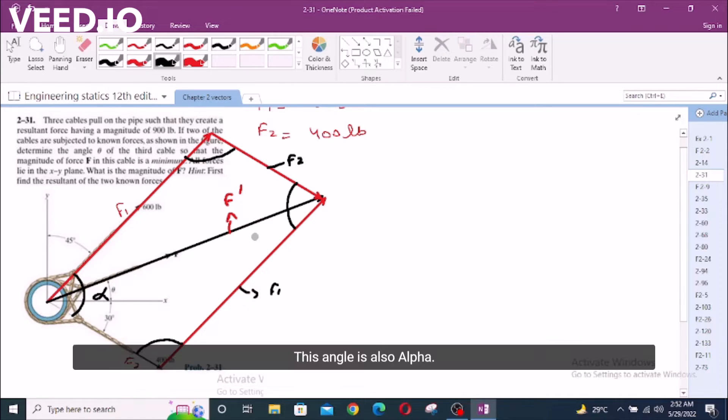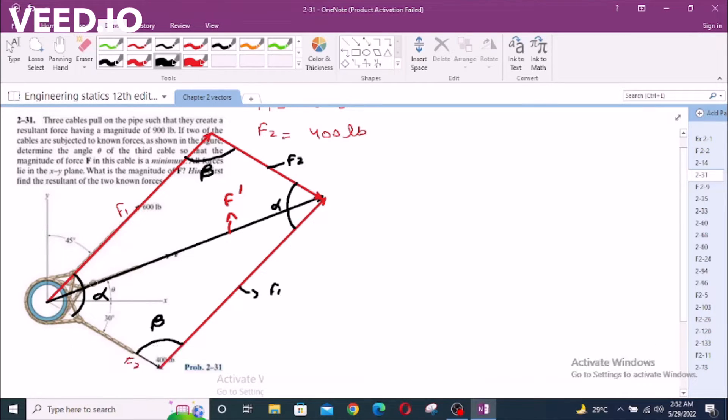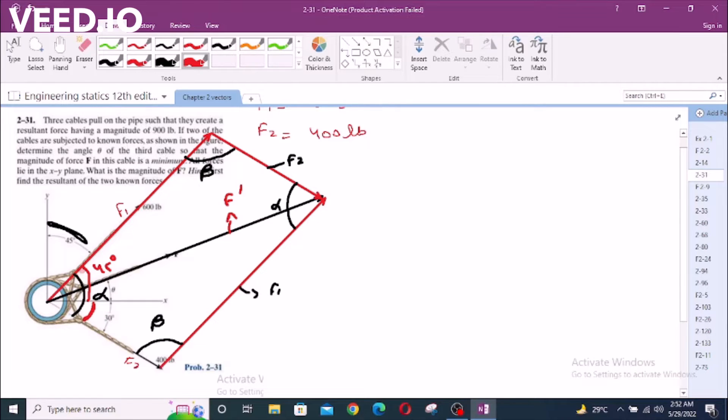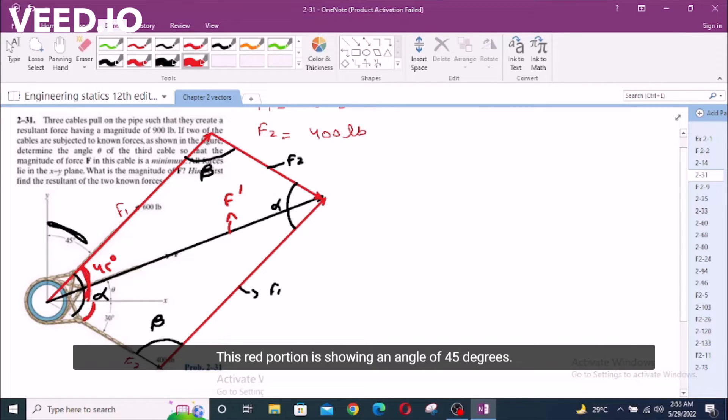Let's call this alpha, this angle is alpha, this is beta, also beta. You can find alpha, we know that a quadrant is 90 degrees, so if 45 degrees is covered, what we are left with is 45 in this portion and 30 in this portion. This red portion is showing an angle 45 degrees. So alpha equals 45 plus 30 degrees, alpha is 75 degrees.